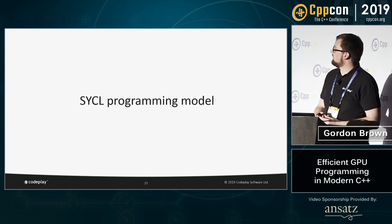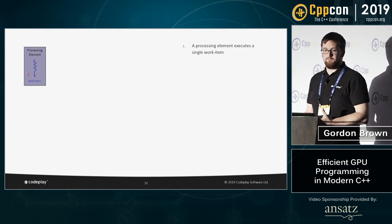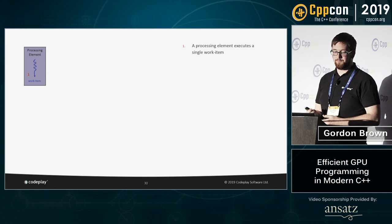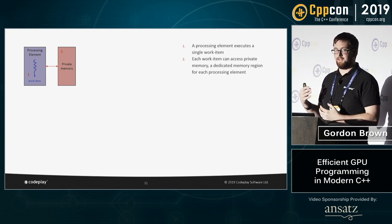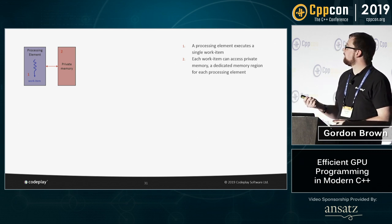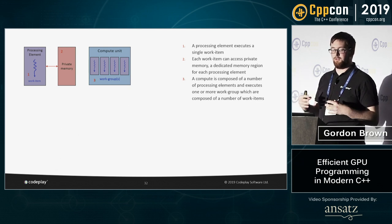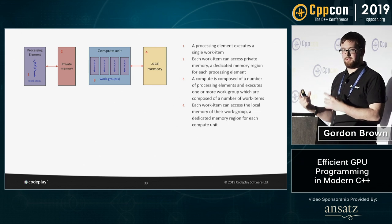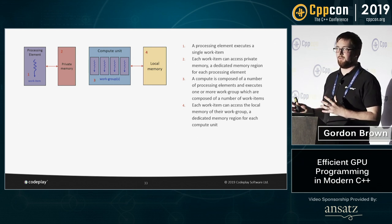Before that, let me quickly talk about the SYCL programming model. You have processing elements — effectively GPU threads — and each work item maps to a single processing element. Each work item can access private memory specific to that work item; no other work item can access it. Processing elements are collected into compute units, and work groups execute in those compute units. Each work group has access to a dedicated region of memory local to that work group, shared among work items within it but not accessible to other work groups.